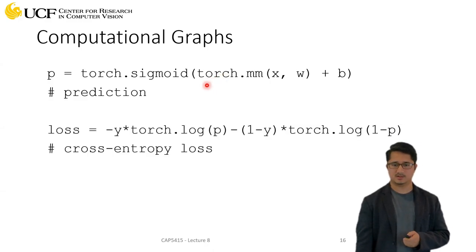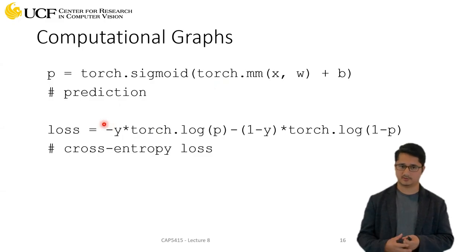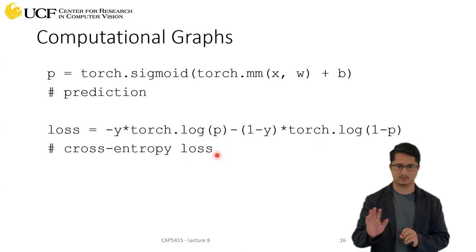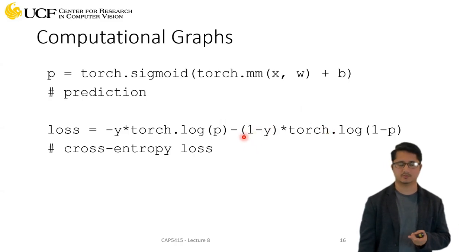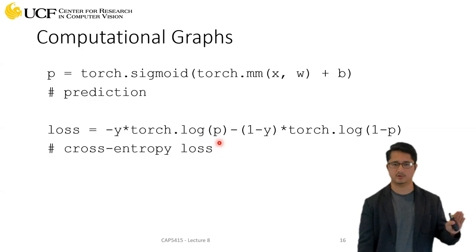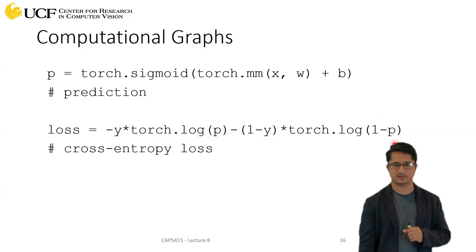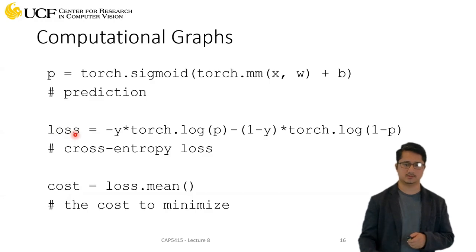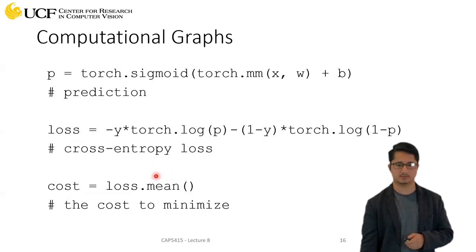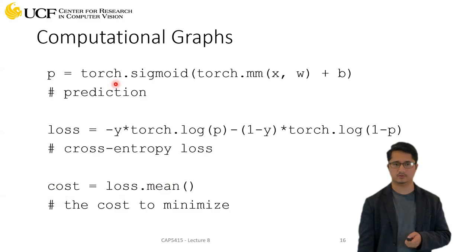Next you need a loss function. Using cross-entropy loss — an equation we've seen before — the loss is computed using the ground truth and the prediction. The cost is computed by averaging the loss over all samples, so if you have 10 samples you compute the loss over each and take the mean. You then minimize this cost to train the network.